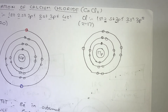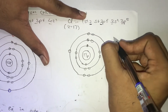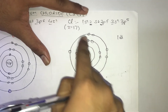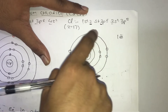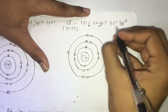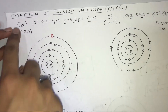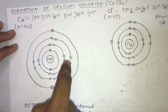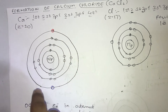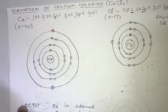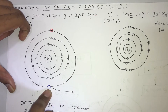Since both of them are unstable, they want to become stable. Chlorine will become stable if it gets 1 electron — if the chlorine atom gets 1 electron, it will now have 8 electrons in the outermost energy level. So the chlorine atom requires 1 electron. For the calcium atom, rather than gaining 6 electrons, it has another option: it will give away both of its outermost electrons.